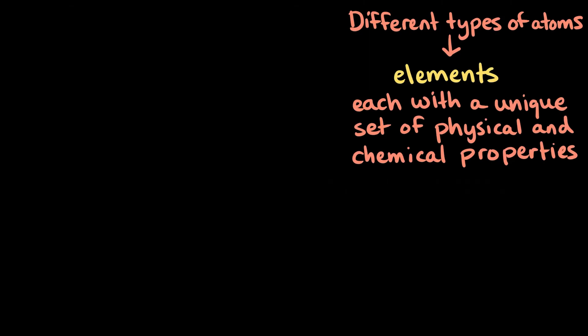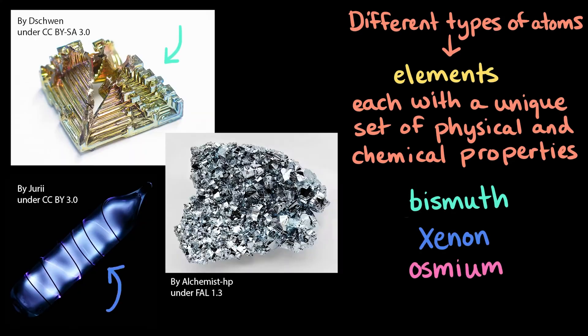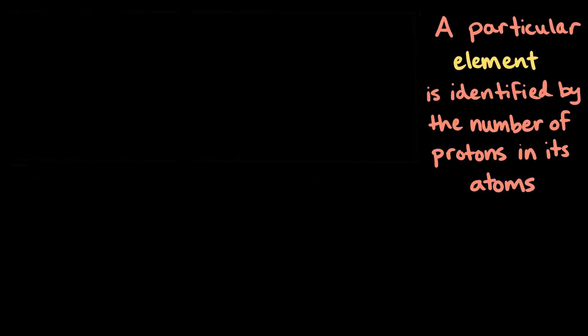Others may be less familiar, such as bismuth, xenon, and osmium. A particular element is identified by the number of protons in its atoms, and the number of protons in the nucleus of an atom is its atomic number, represented by the symbol Z.